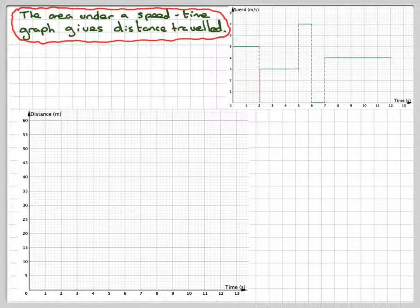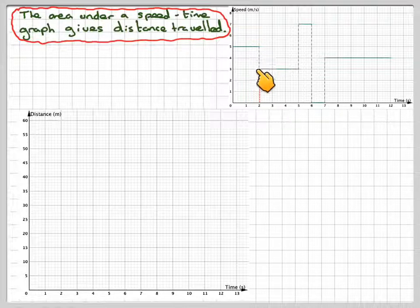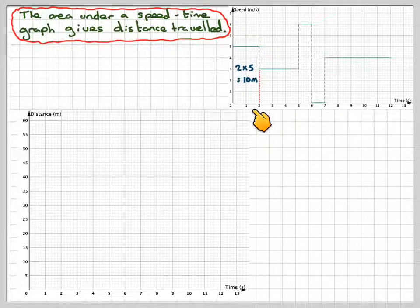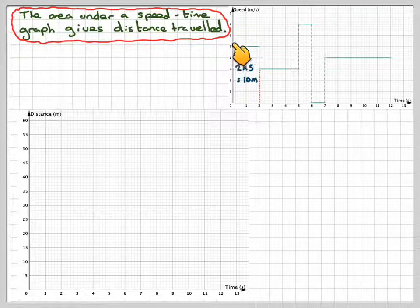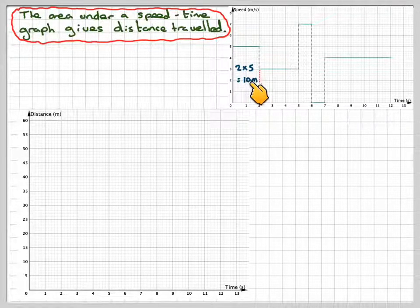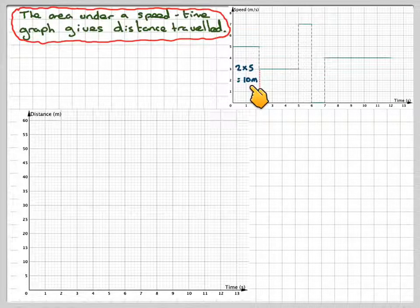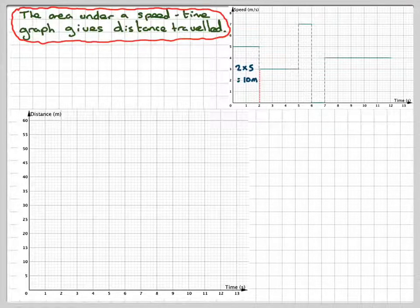So in the first case, which is this bit here, the area is going to be 2 times 5, which is 10 metres. So in the first two seconds it travels 10 metres.